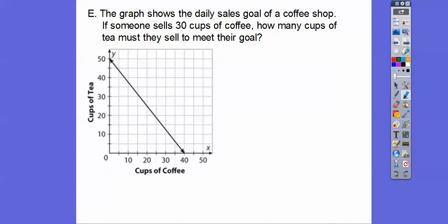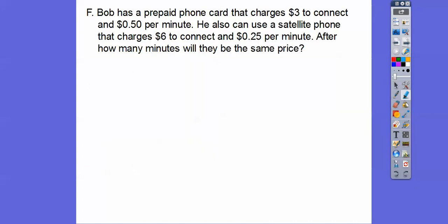The graph shows the daily sales goals of a coffee shop. So if someone sells 30 cups of coffee, how many cups of tea must they sell to meet their goals? So cups of coffee is down here. So 30 cups of coffee goes straight up to the line, and then we're going to go straight over to see how many cups of tea. So it goes straight up, straight over. So I don't know, about 13 cups of tea, I would think. 12 I'd probably take. 13, okay.